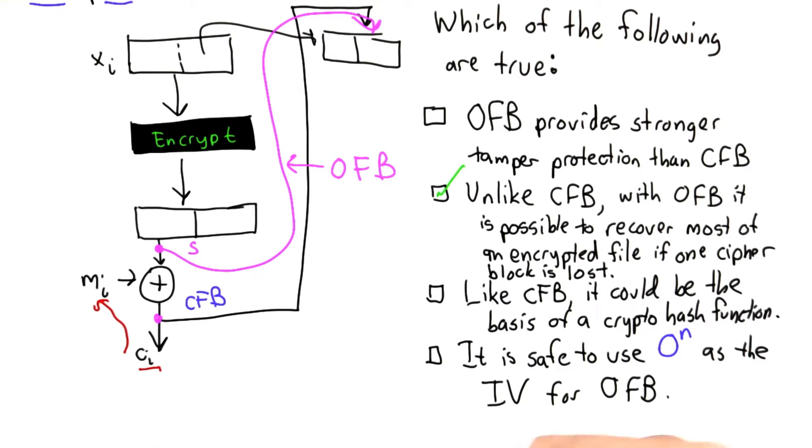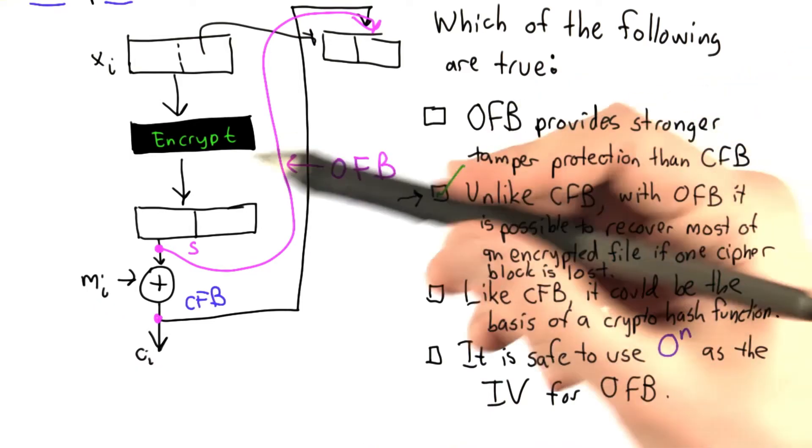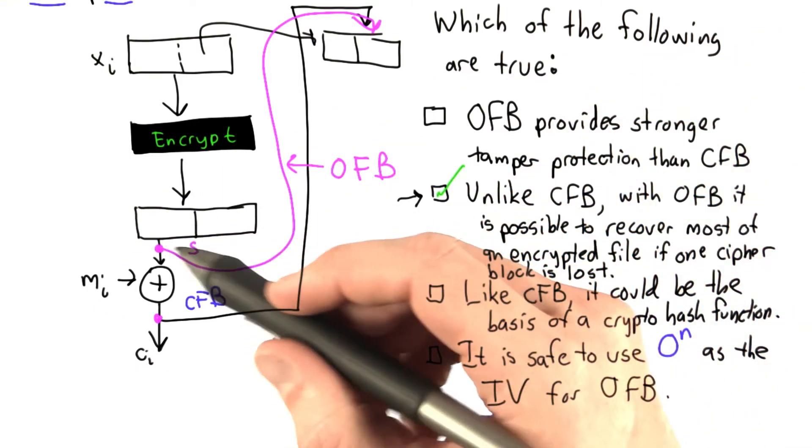This is similar to a way an attacker could tamper with a message in a one-time pad. With output feedback mode, it is possible to recover most of an encrypted file if one cipher block is lost.